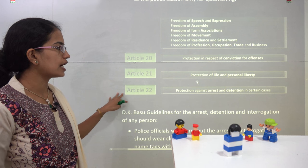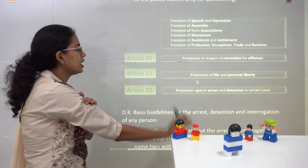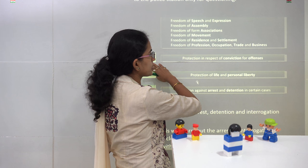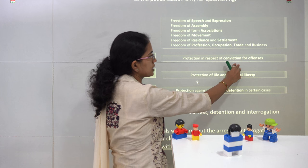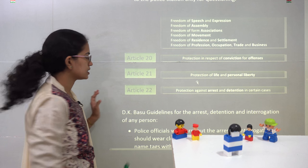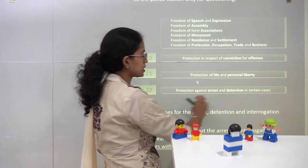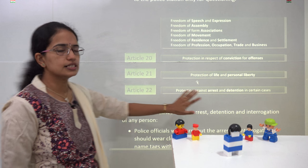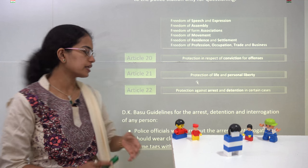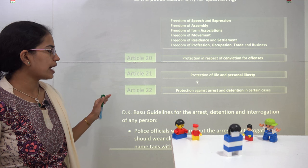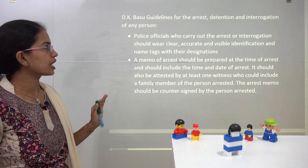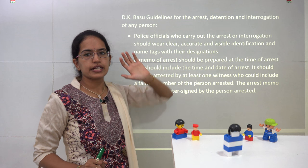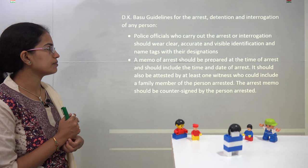There are three important articles: Article 21 — protection of life and liberty; Article 20 — protection in respect of conviction for offences; and Article 22 — protection against arrest and detention. All three articles work for the liberty of an individual. Then you have the D.K. Basu guidelines, which talk about arrest, interrogation, and detention for a criminal person.